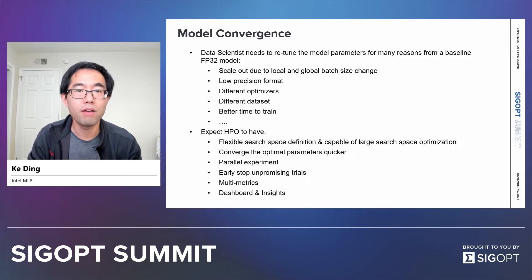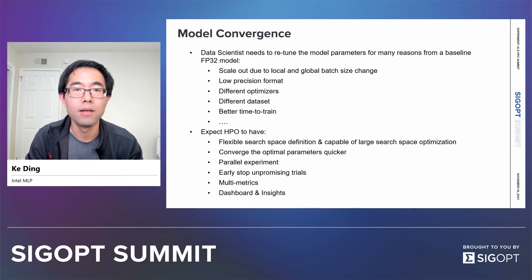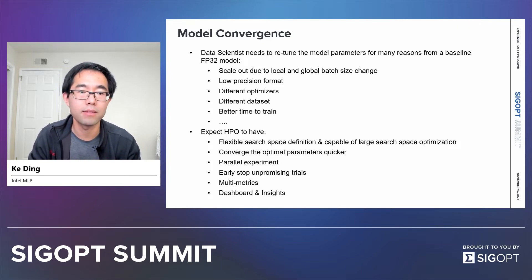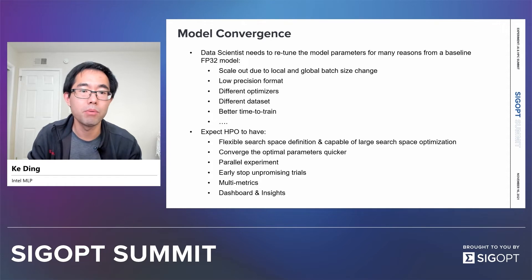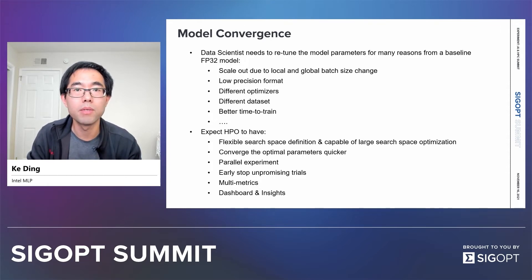So even if you have a well-trained FP32 model, when you retrain or fine-tune it for a downstream task, or maybe optimize for a particular hardware platform, oftentimes you cannot use the original hyperparameter set and you will need to tune a new one in order to meet your business requirement.